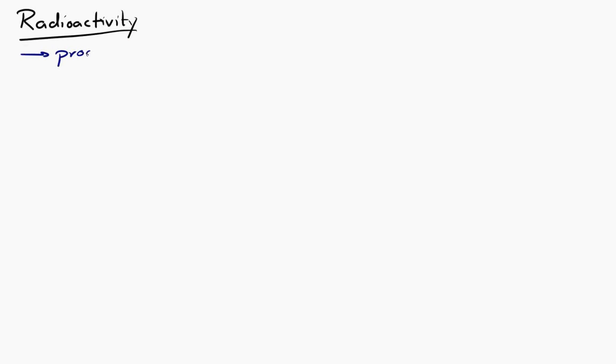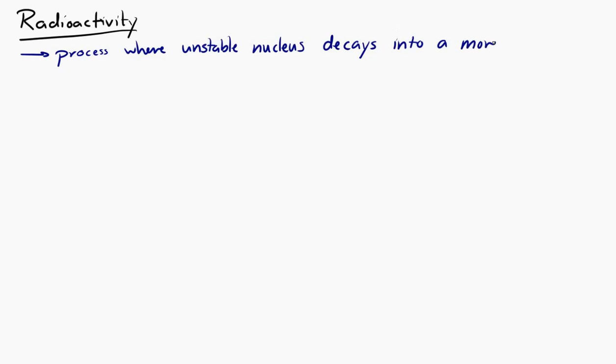Let's take a look at radioactivity. Radioactivity refers to a process where an unstable nucleus changes, or decays, into a more stable nucleus by emitting radiation.